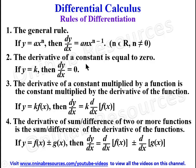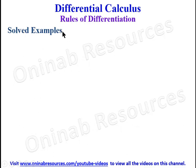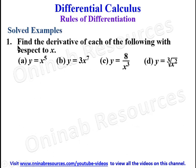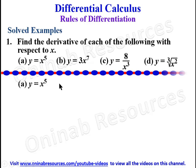From here we look at some worked examples. Example 1: find the derivative of each of the following with respect to x. (a) y = x^5, (b) y = 3x^7, (c) y = 8 over x cubed, and (d) y = cube root of x squared.